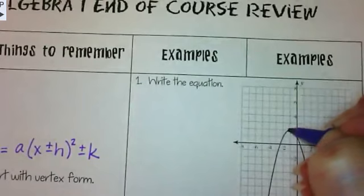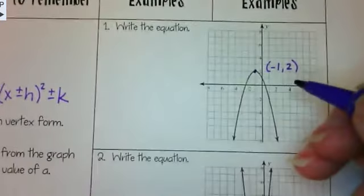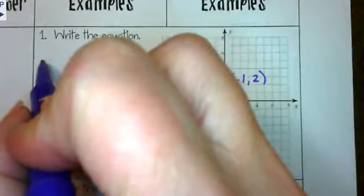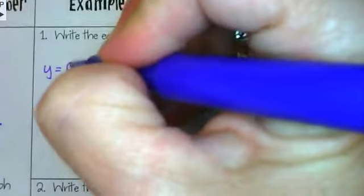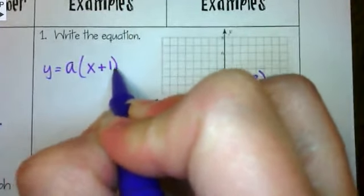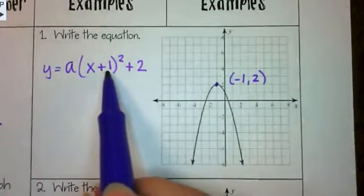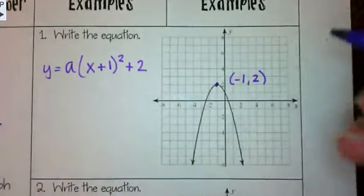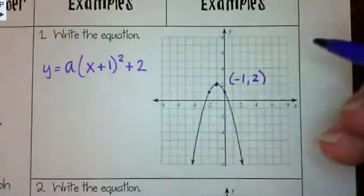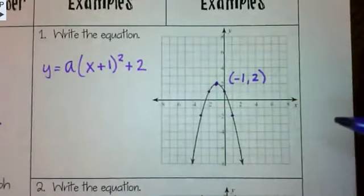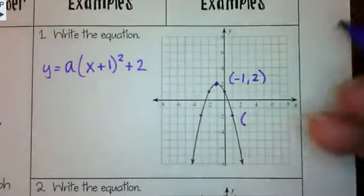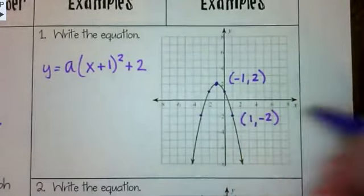The vertex is right here at negative 1, 2. So the vertex is at the point negative 1, 2. I'm going to start off by saying that y equals a times (x plus 1) squared plus 2. That shows me that the vertex is negative 1, 2. Now I'm just going to look for another point on the graph. I'm going to use the point 1, negative 2.